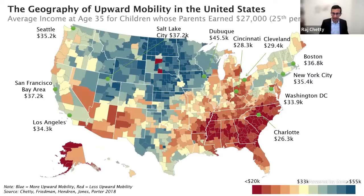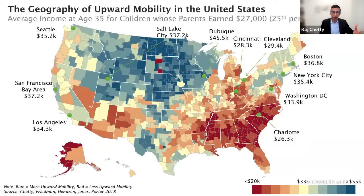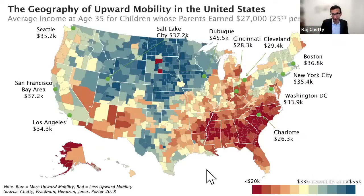We color the map so blue-green represents areas with higher upward mobility and red-orange represents lower upward mobility. There is an enormous amount of variation in children's chances of rising up and achieving the American dream. In some places like Dubuque, Iowa, kids from families making $27,000 a year end up solidly in the middle class making $45,000 or beyond. But in other places like Charlotte, North Carolina and much of the Southeast, kids from those families are actually making less than their parents did on average.